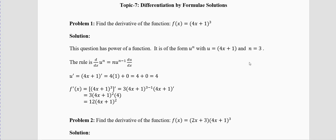Problem 1: Find the derivative of the function f(x) = (4x+1)³. Whenever you see a question, think about the structure and the formula you are going to use. This is of the form u^n, where n = 3 and u = (4x+1). The rule is: n · u^(n−1) · du/dx.